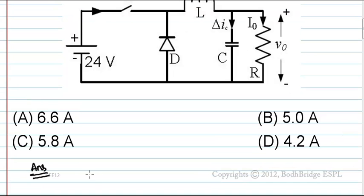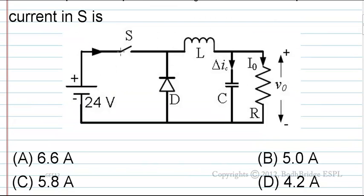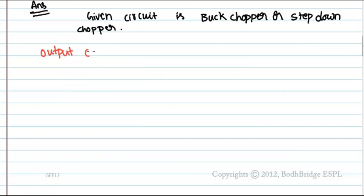Answer: Given circuit is buck chopper or step-down chopper. When chopper is on, switch is closed, inductor charges. When switch is off, inductor discharges through this path. Output current and current ripple waveform.